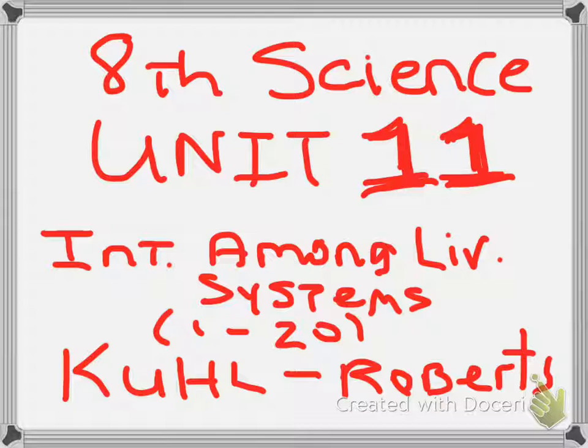Number ten: Which organism above has both a predator-prey and a producer-consumer relationship in its diet? F) arctic hare, G) caribou, H) lemming, J) arctic fox.